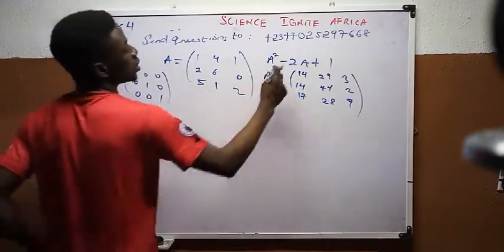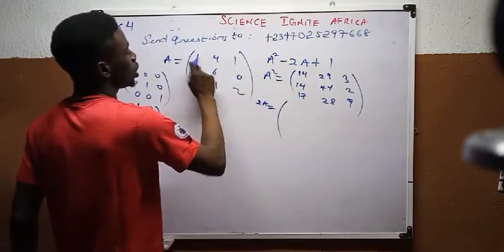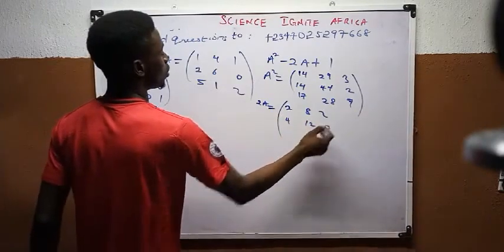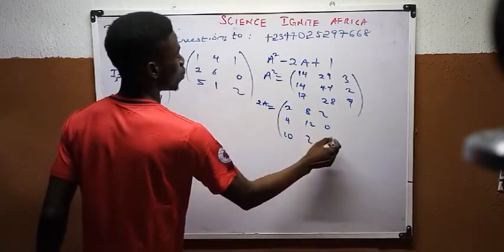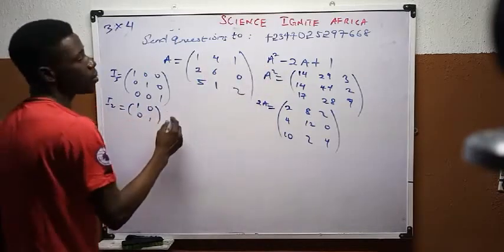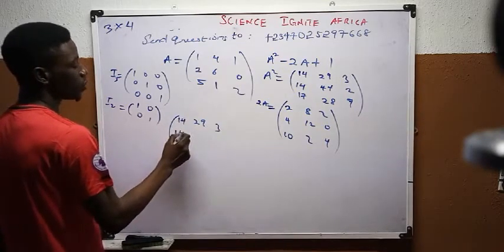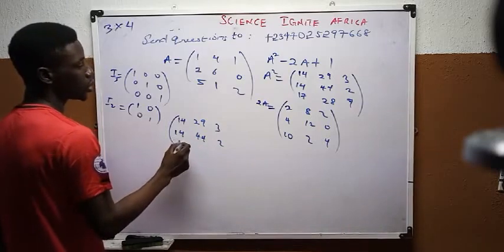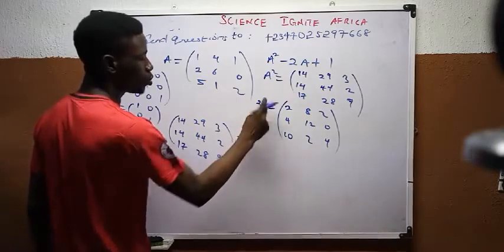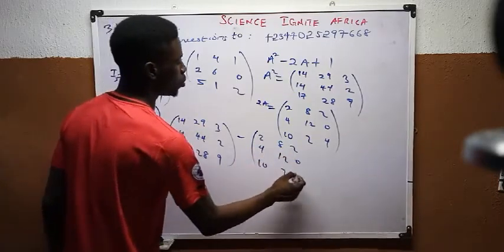Now we need 2A. For a scalar multiple, just multiply every entry by 2. So 2A = [2, 8, 2 / 4, 12, 0 / 10, 2, 4]. Now we compute A² − 2A + I, where I is the 3×3 identity matrix [1,0,0 / 0,1,0 / 0,0,1].